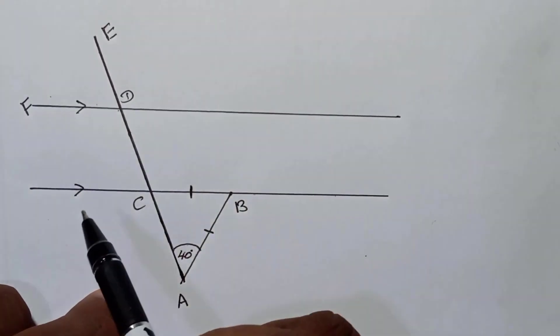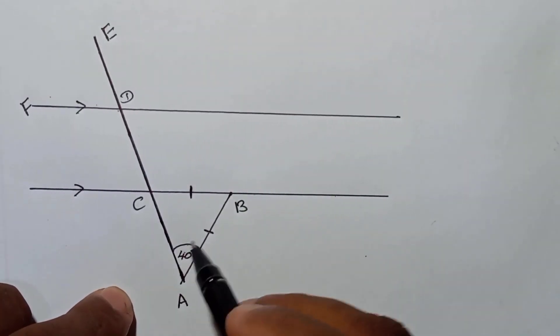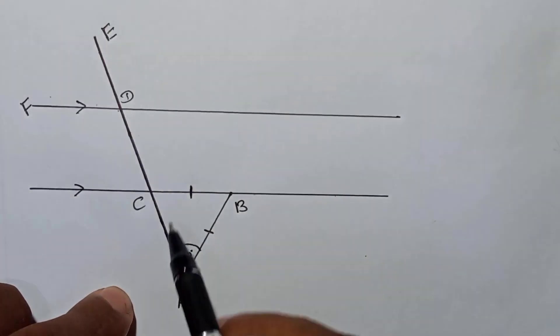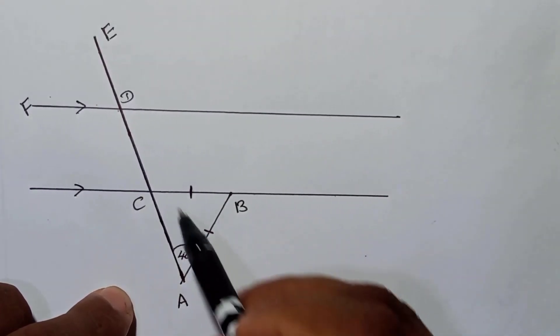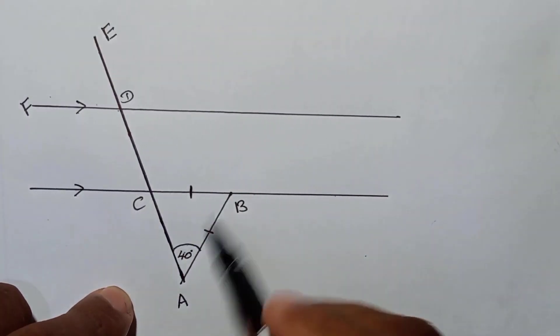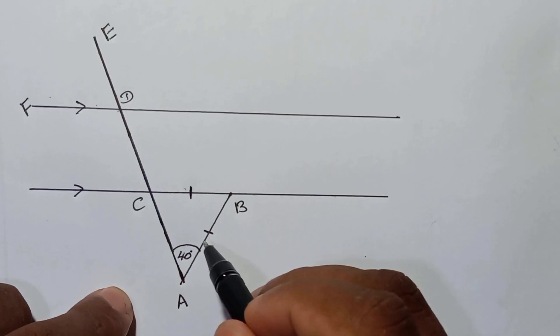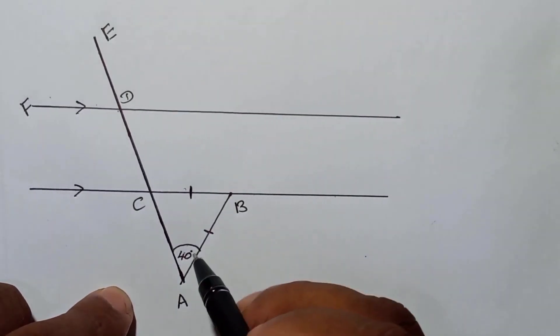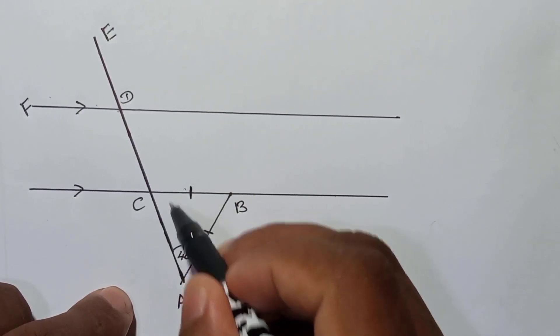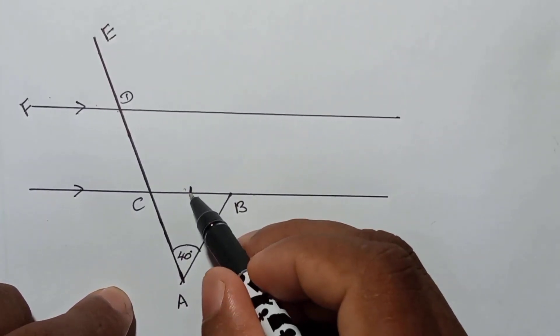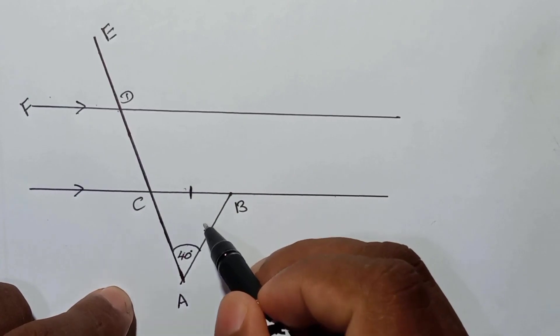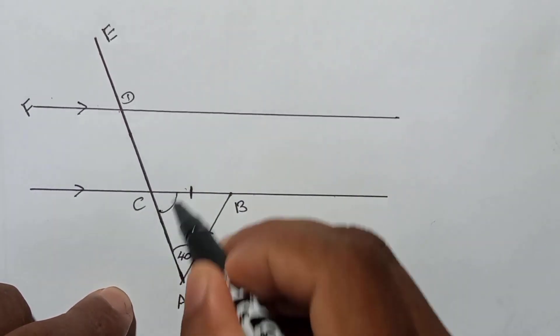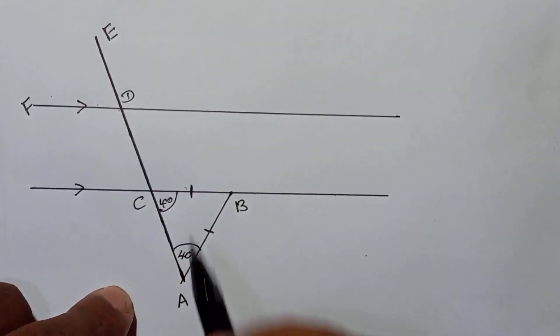Now here, when you see they tell CB equal to BA, this is an isosceles triangle. That means if these two are equal, then if this is 40, this also must be 40 because opposite angles of equal sides.